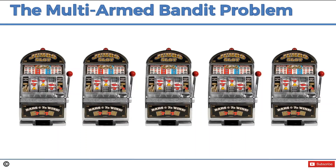A quick refresher on the multi-armed bandit problem: we have several slot machines, each one with a distribution behind it — D1 to D5. We don't know what these distributions are, and we need to start playing these machines while figuring out which one has the best distribution so we can then exploit it. We need to maximize our return during that process. So we have to find the ideal balance or trade-off between exploration and exploitation. We've had a few tutorials previously on these things, covering the multi-armed bandit problem in a lot of detail, so if you haven't watched that tutorial, highly recommend jumping into the previous section.